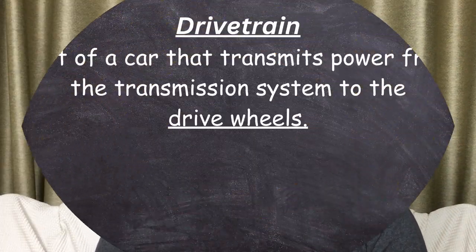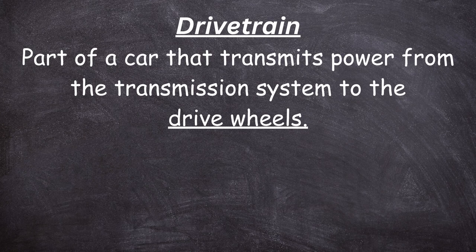Today we are going to be discussing drivetrains and differentials. A drivetrain is a portion of the car which transmits power from the transmission system all the way to the drive wheels. Drive wheels are basically wheels that drive the car, converting the torque received into traction. There are many different configurations when it comes to drivetrains: front-wheel drive, rear-wheel drive, all-wheel drive, and four-wheel drive.